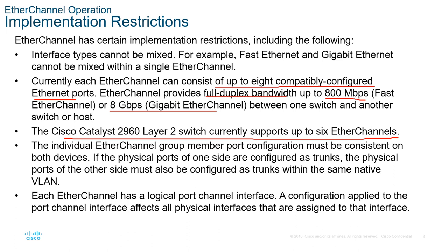Each individual EtherChannel group member port configuration must be consistent on both devices. If the physical ports of one side are configured as trunk, the physical port on the other side should also be trunk and have the same native VLAN. Each EtherChannel has one logical port channel interface.